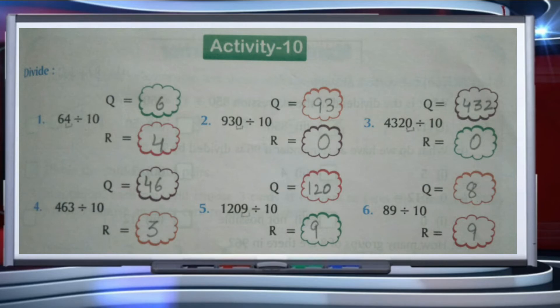The third question is 4320 divided by 10. When we divide by 10, the digit on the ones place is the remainder — that is 0 — and 432 is the quotient. The three digits that are left over form the quotient.